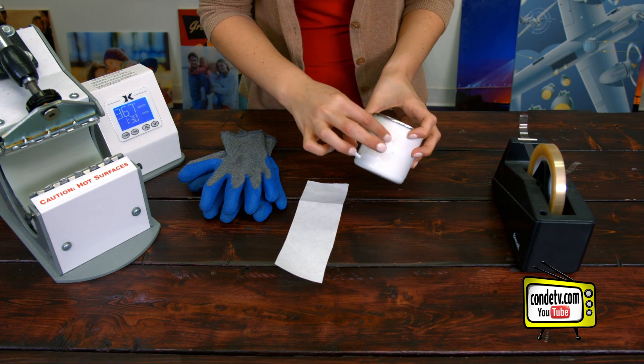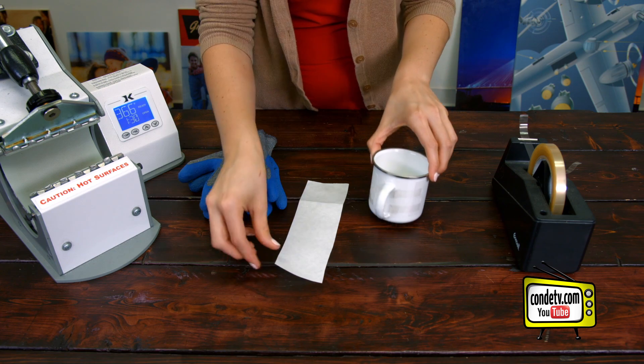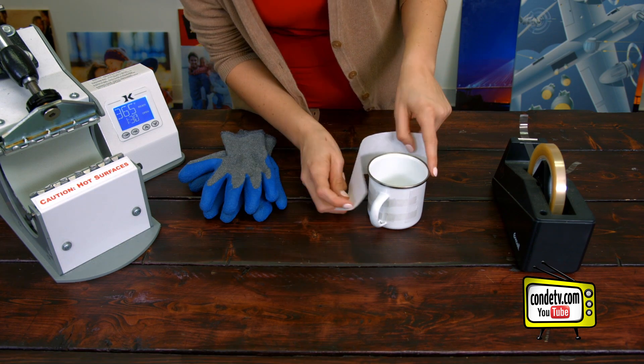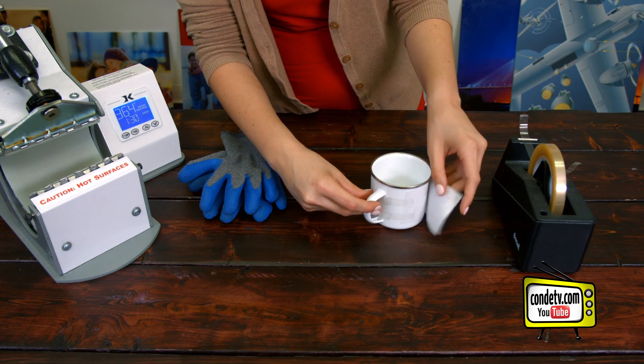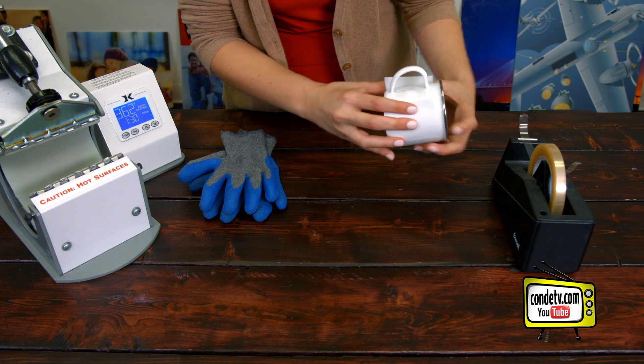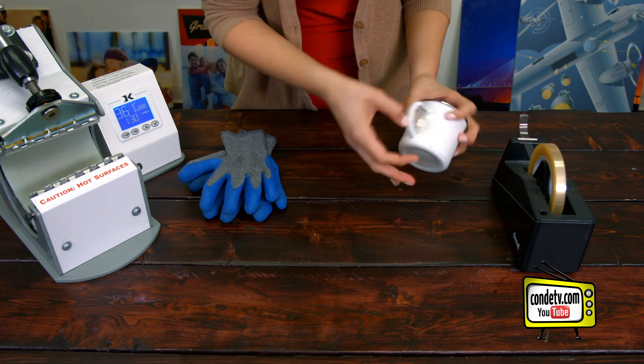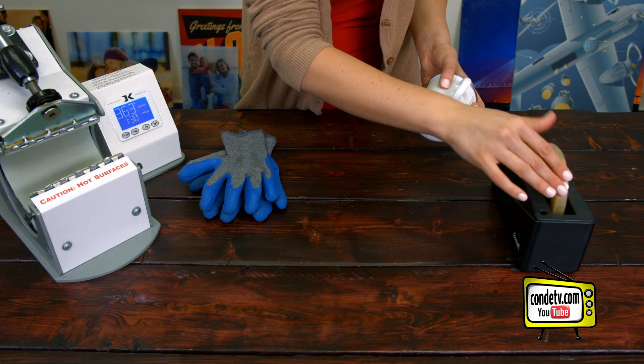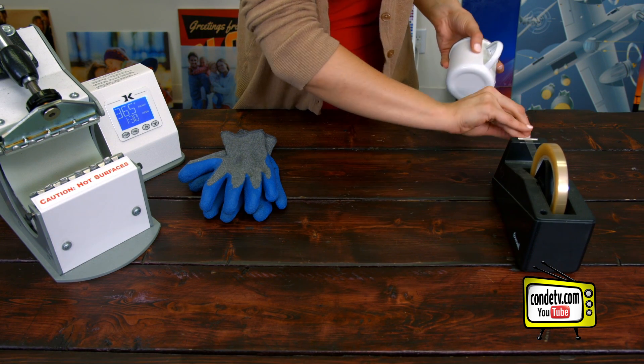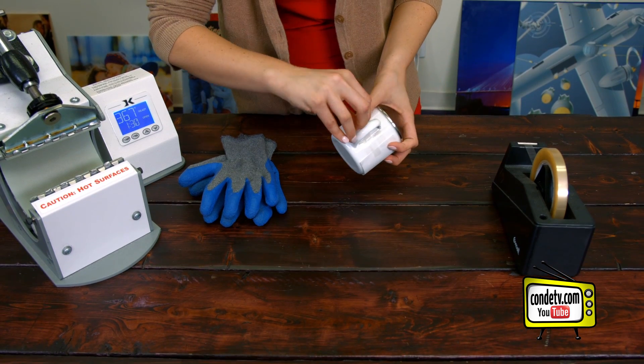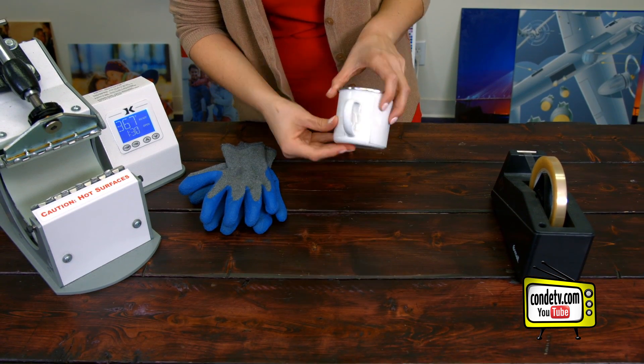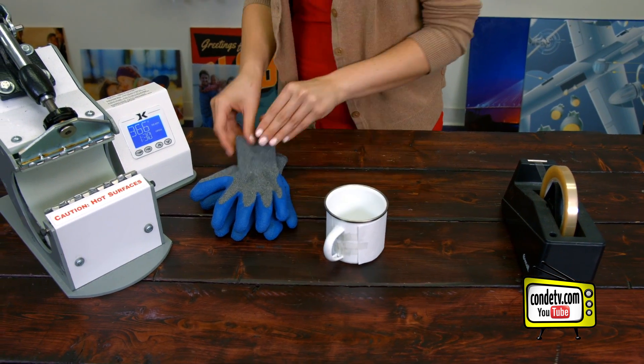And once we get our image taped down securely, we're going to do the same thing with our protective paper. Wrapping it around the mug, going on top of our image, and placing a couple pieces of tape down just so that it remains secure. And once we get that all secured, we're ready to head to the mug press.